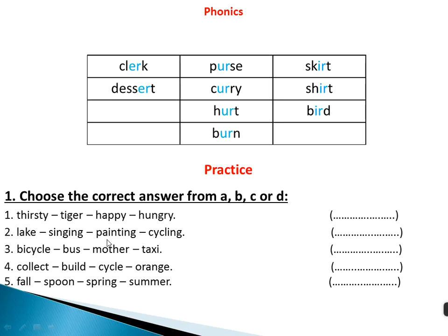Number two: lake, singing, painting, cycling. All of them are verbs with '-ing' — gerunds — except 'lake'. You can replace it with 'playing'.